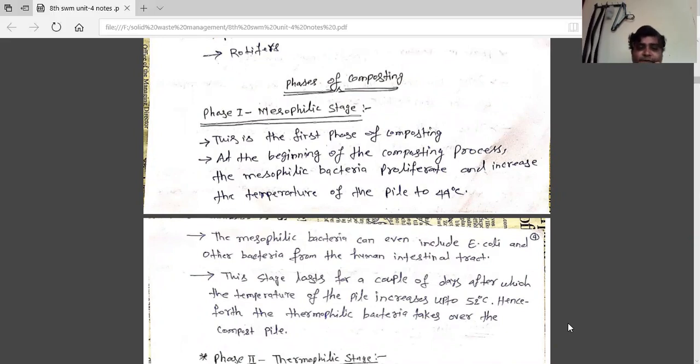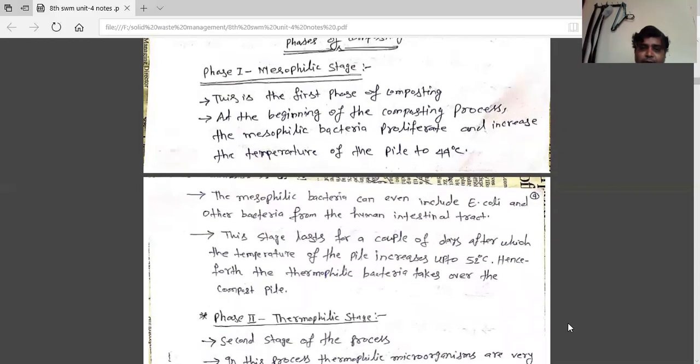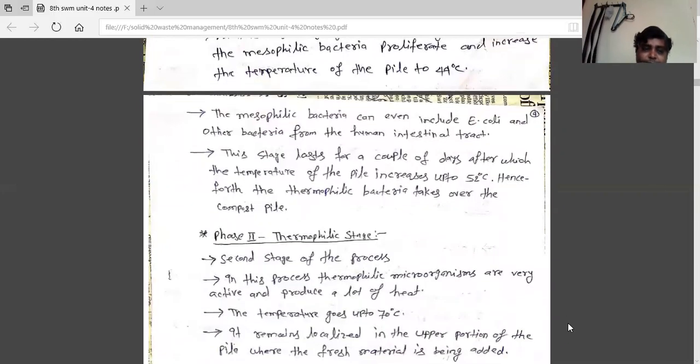The mesophilic bacteria can include E. coli and other bacteria from human intestines. This stage lasts for a couple of days, after which the temperature of the pile increases up to 52 degrees. Henceforth, the thermophilic bacteria takes over the composting.